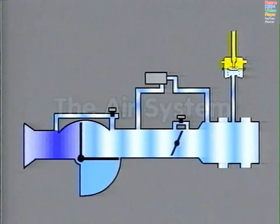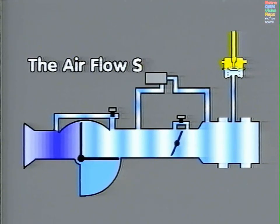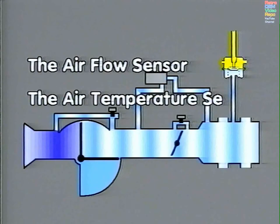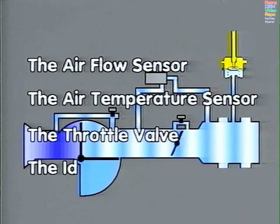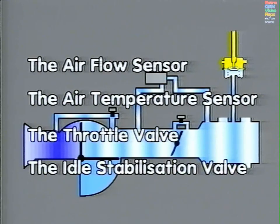The air system. There are four main components in the Digifant air system: the air flow sensor, the air temperature sensor, the throttle valve, and the idle stabilization valve.